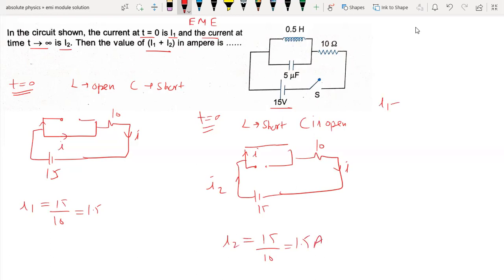Therefore, I1 plus I2 equals 3 amperes. This is how we easily answer this question.